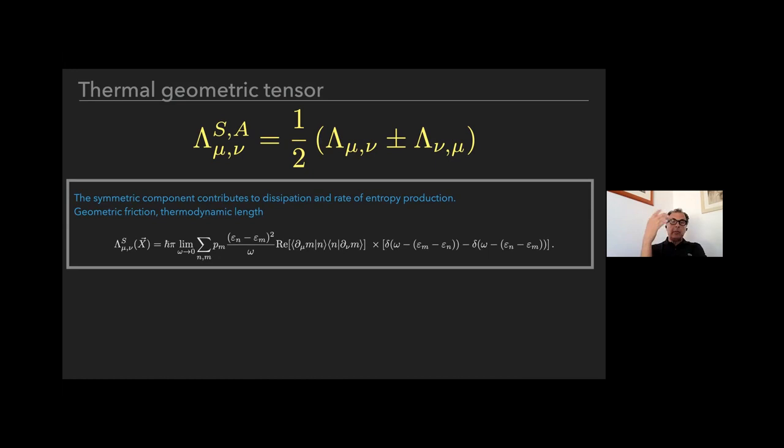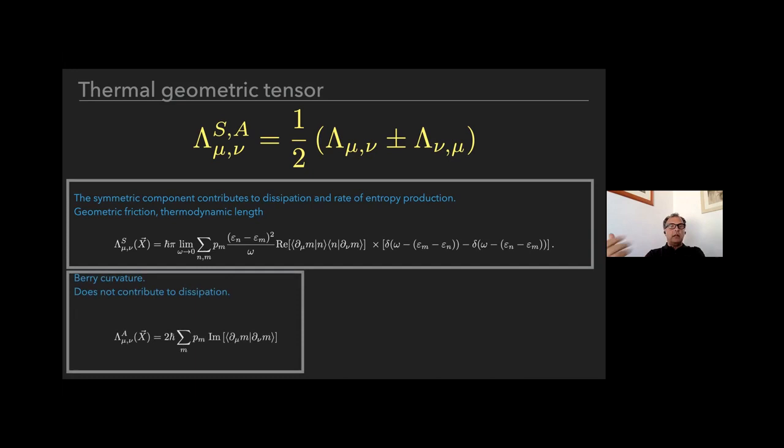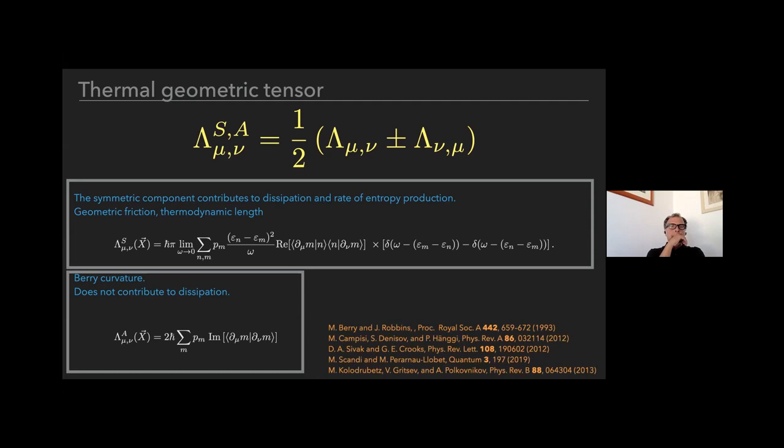All the properties of the system are contained in this matrix lambda. The properties of lambda will encode all the features that the thermal machine will show. In particular, if one analyzes this, there will be a symmetric and antisymmetric part. The symmetric part will be related to entropy production, while the antisymmetric part is essentially the generalization of the Berry curvature for a system populated with some probability p_m.